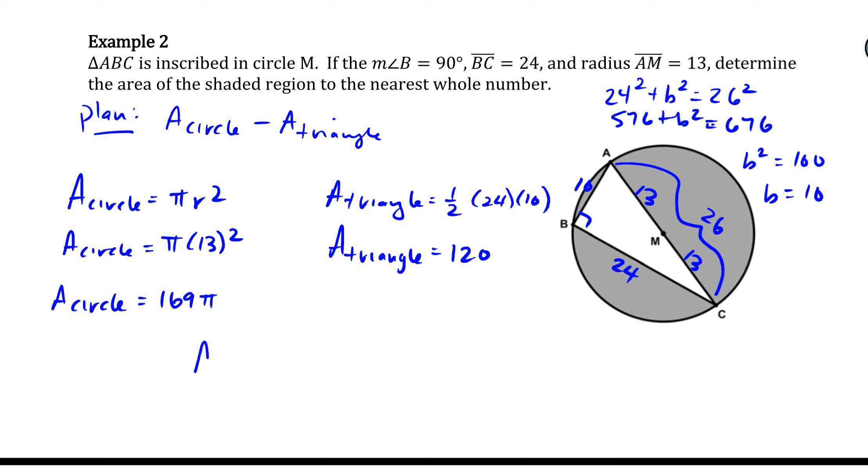So if I want to find the area of the shaded region, I'm going to take 169π minus 120. Now that is actually an acceptable answer. We would consider that answer in terms of π. I could also find the area of the shaded region by typing that in my calculator and seeing what decimal we get. Since it does say to the nearest whole number, that's kind of telling us to round it. So if I do 169π minus 120, I get 410.929 dot dot dot. So we can round that to 411.